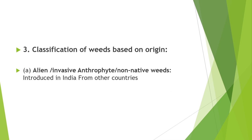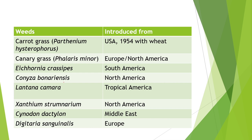Next basis of classification is on origin — classified into alien and native weeds. Alien weeds are introduced in India from different countries. Examples: carrot weed introduced from USA in 1954 with wheat; Canary grass (Phalaris minor) introduced from Europe or North America; Eichhornia crassipes introduced from South America; Conyza bonariensis from North America; Lantana camara from tropical America; Xanthium strumarium from North America; Cynodon dactylon from Middle East; and Digitaria sanguinalis from Europe.